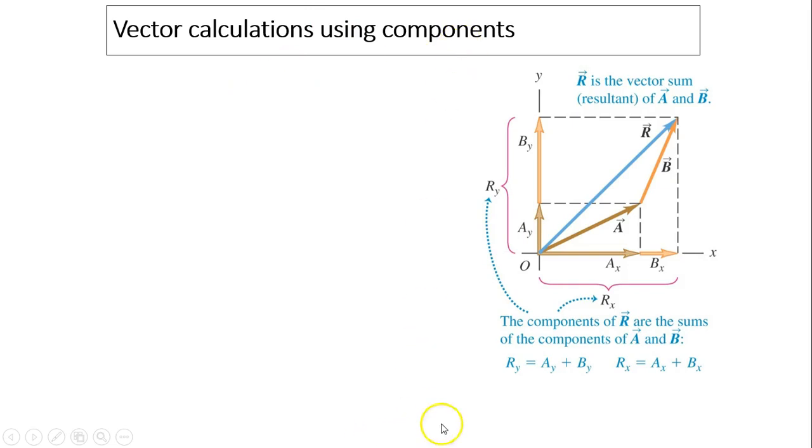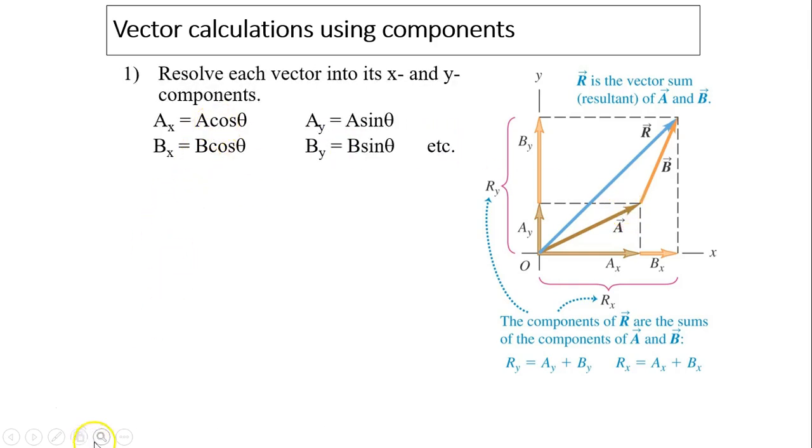Vector calculations using components. We can add vectors A and B using components to find the resultant, no matter what the angle is. Step one: Resolve each vector into x and y components. Ax equals A cosine theta, Ay equals A sine theta. Similarly for Bx and By. If you have C or D, you just keep doing it.